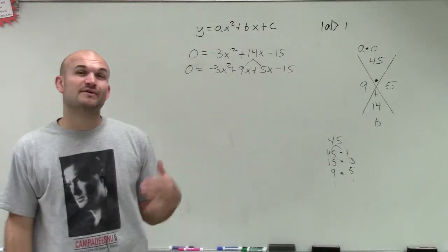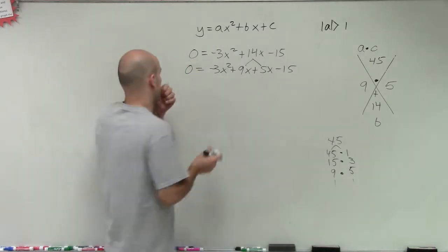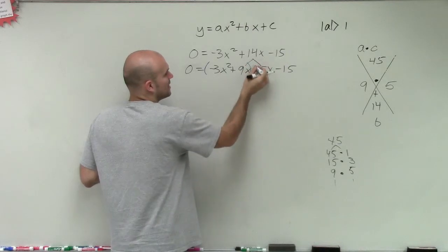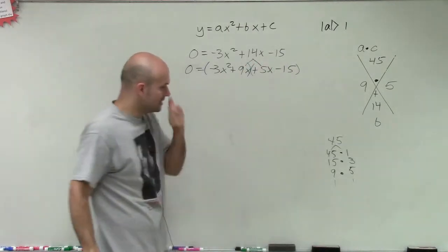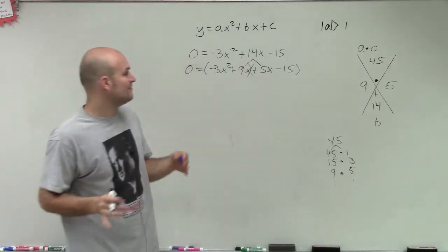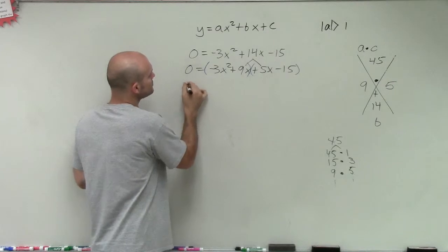All right. So the reason why we rewrote our middle term is because now what we're going to do is factor by grouping. So factoring by grouping, we're going to group our first two terms and then group our last two terms. And then we're going to factor out our common terms of each expression.